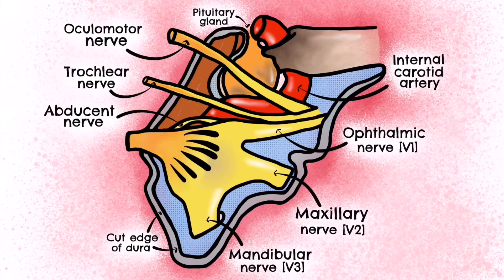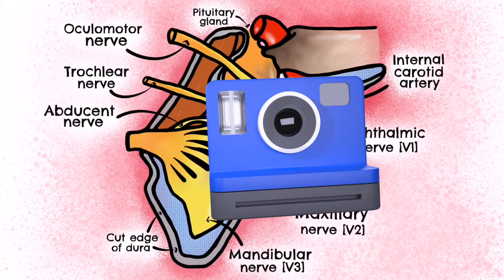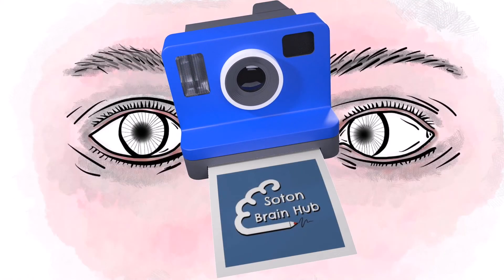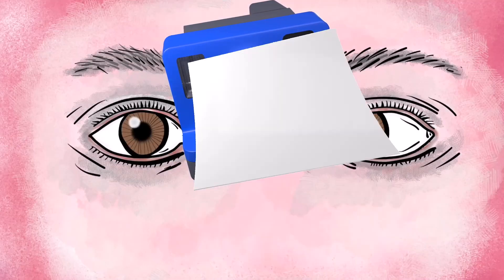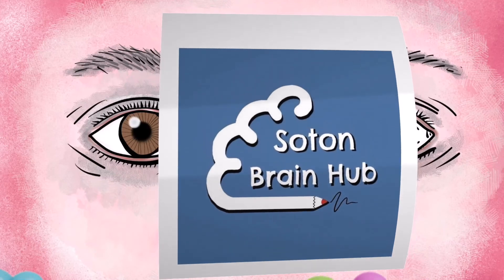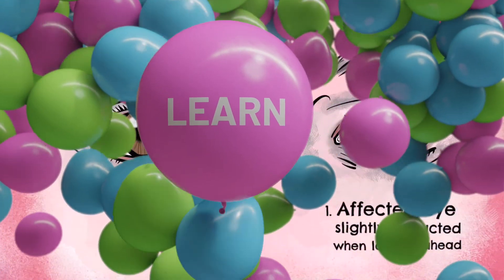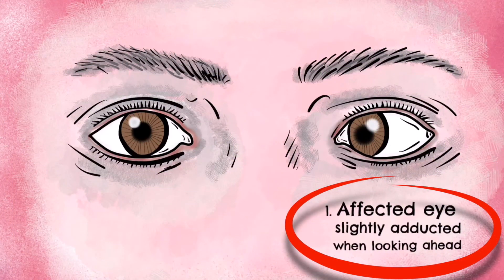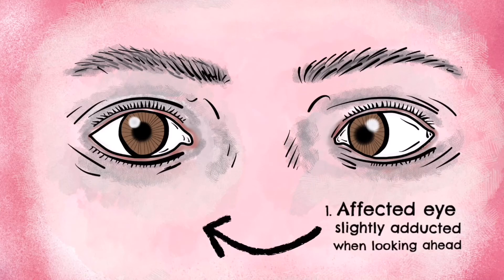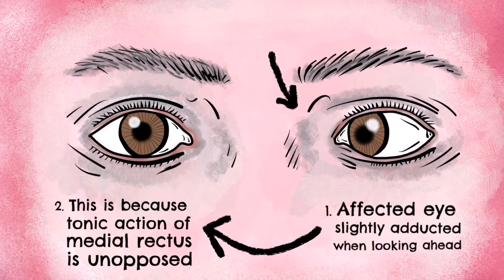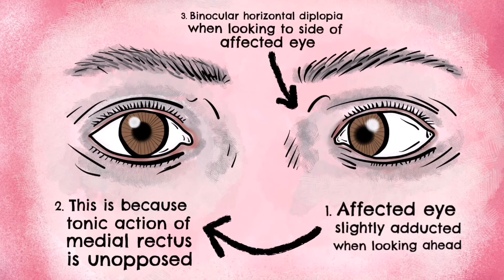Finally, we're going to look at abducens nerve palsies. There are a number of causes including cavernous sinus thrombosis or fistula and internal carotid aneurysms. It can also be caused by orbital pathologies such as neoplasm, inflammatory diseases, infection, or trauma. Clinically, abducens palsy will present with slight adduction of the affected eye due to the tonic action of the medial rectus being left unopposed. The patient will experience binocular horizontal diplopia when looking to the side of the affected eye.